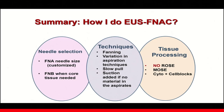Finally, to conclude: the way I do EUS FNAC is that needle selection is customized depending on the lesion. I always apply the fanning technique. The aspiration technique — whether door knocking or woodpecker — depends on the nature of the lesion. I always apply a slow pull. Suction may be added if no material is observed in the aspirates. Tissue processing, which I think is as important as the aspiration techniques — we have no ROSE, therefore I always do macroscopic on-site evaluation of the tissue, looking for core tissue.